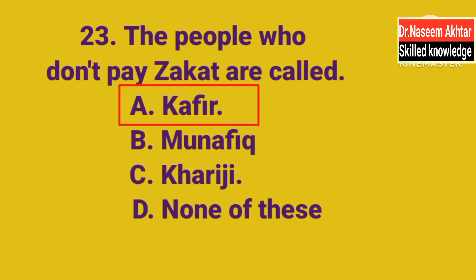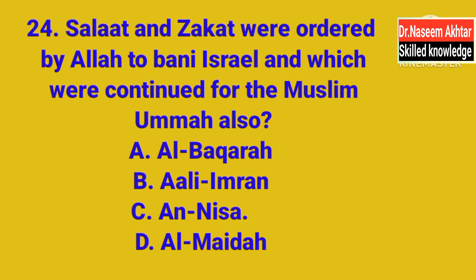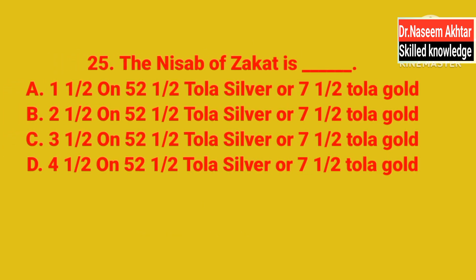MCQ 24: Salat and Zakat were ordered by Allah to Bani Israel and continued for the Muslim Ummah also — this is mentioned in which Surah? A. Al-Baqarah, B. Al-Imran, C. An-Nisa, D. Al-Maidah. The correct answer is A — Surah Al-Baqarah.